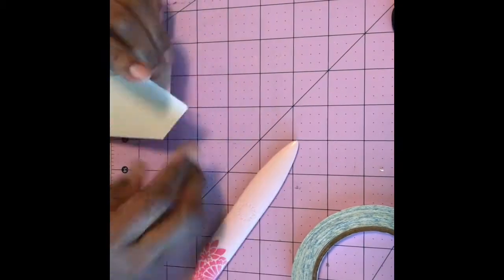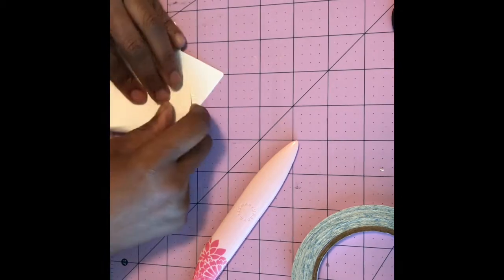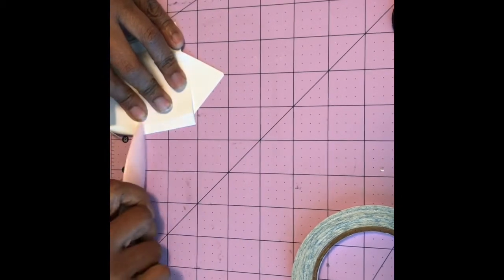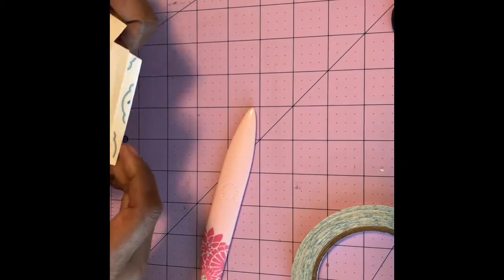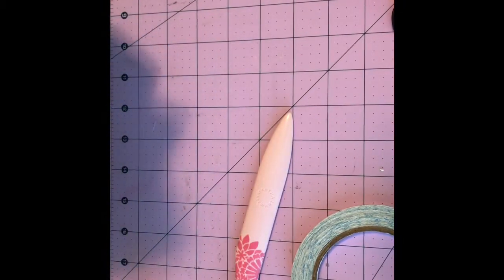So here I'm using my bone folder to crease the score lines. And it's very easy to assemble this box. I didn't have much trouble with it.